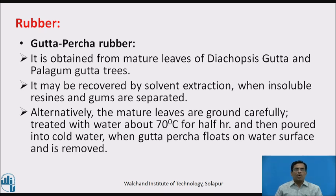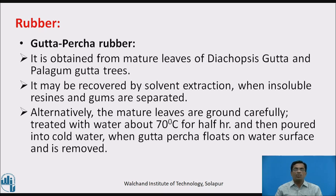Rubber can also be obtained from gutta percha. It is obtained from the mature leaves of Dicopsis gatta or Palaquium gatta trees. It may be recovered by solvent extraction, where insoluble resins and gums are separated. Alternatively, the mature leaves are ground carefully, treated with water at about 70 degrees Celsius for half an hour, and then poured into cold water, where gutta percha floats to the surface and is removed.